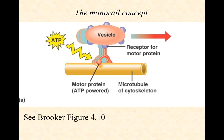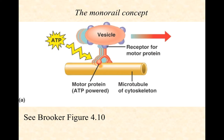Here's the monorail concept: imagine a vesicle — a large membrane-bound sack carrying cargo — with motor proteins attached to it. The motor proteins burn ATP, causing a change in the shape of the protein at the expense of ATP, like taking a step forward. When the phosphate group that was added to change the protein's shape gets removed, it returns to its normal shape, causing the rest of the motor protein to scoot forward. At the expense of ATP, these motor proteins can literally walk down microtubules of the cytoskeleton. Check figure 4.10 in your textbook for a good explanation of this.